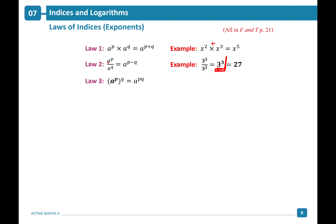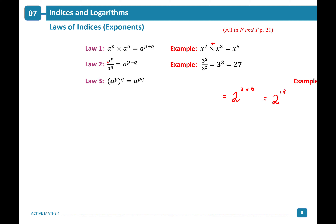Law 3: a to the power of p, all to the power of q — when raising a power to another power, multiply the exponents together. For example, 2 to the power of 3 all to the power of 6 gives 2 to the power of 18. Similarly, 5 squared to the power of 4 equals 5 to the power of 8.